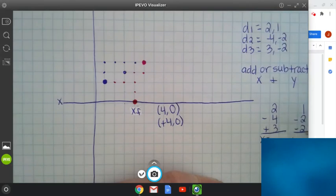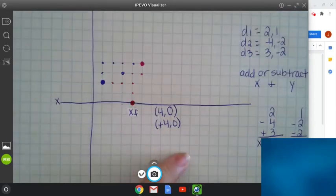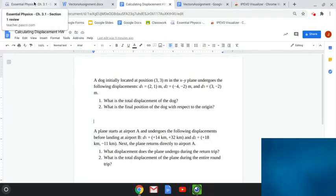So 2 minus 4 is negative 2 plus 3 is a positive 1. 1 minus 2 is negative 1, minus 2 again is going to be negative 3. This is how you would do this with paper and pencil. But your textbook has something handy that will let you do this digitally. So let's check that out.